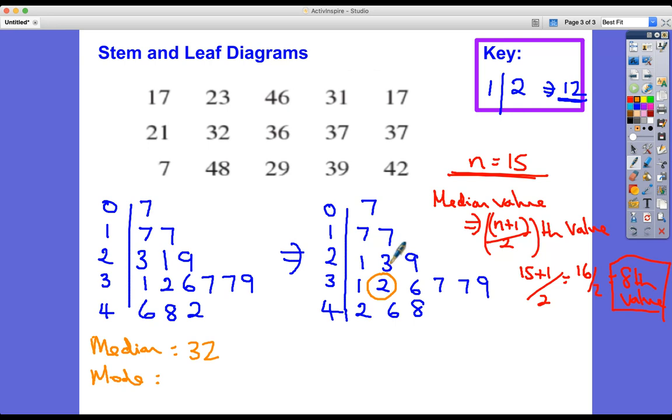What's my mode? Well, when I was drawing this out I noticed that it's actually a bimodal set of data because there are two modes and they're easy to spot now. I've got 17 and 37 - two modes, it's bimodal. You can have more than one mode.